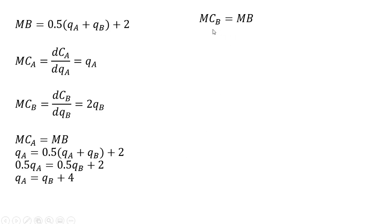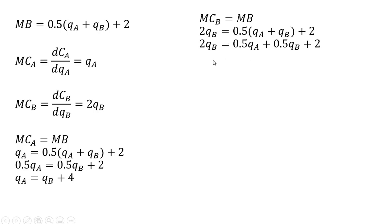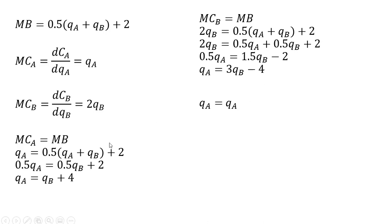We'll do a similar thing for firm B. The optimal amount of pollution reduction will occur where the marginal cost for firm B equals the marginal benefit of reducing pollution. Setting those two equations equal, we solve for Q_A. Then we set the two Q_A equations equal to one another so we can solve for firm B's pollution reduction.